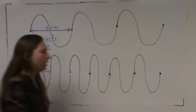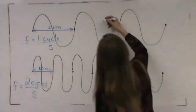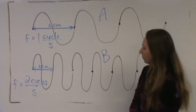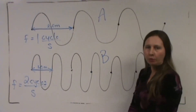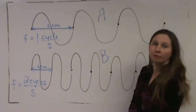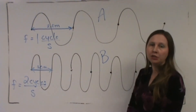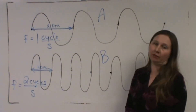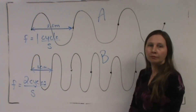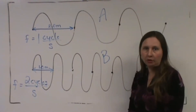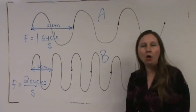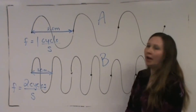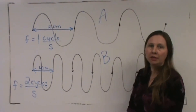We'll call the first wave A and the second wave B. Which wave has the greater frequency? Wave B has the greater frequency. Which wave has the greater wavelength? Wave A has the greater wavelength. I hope you have a qualitative idea of the difference between wavelength and frequency — I've tried to use numbers as sparingly as possible in this discussion.